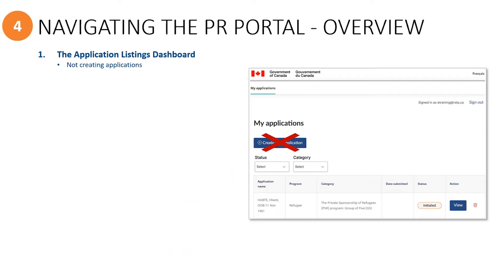However, you should know that as an invited group member to a sponsorship — for example, a constituent group or co-sponsor of a SAW — you will never use that option, because only the primary sponsor, which is the SAW rep, will initiate applications for the SAW.